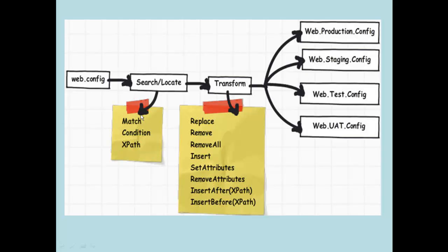There are various functionalities provided by the web.config transformation engine which help you search and transform your web.config file elements and values. To achieve our goal — changing the connection string value — we will use the Match function to locate the element by name, and then use SetAttributes to change the value.